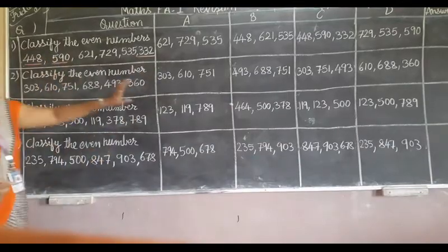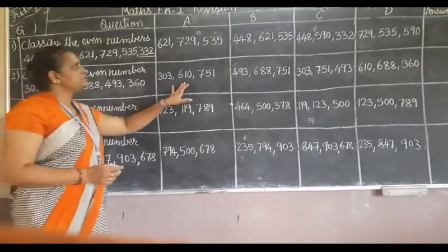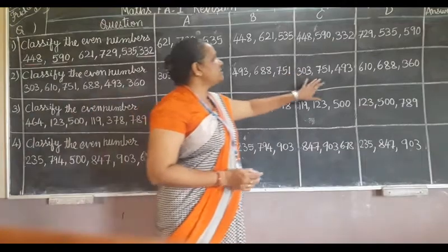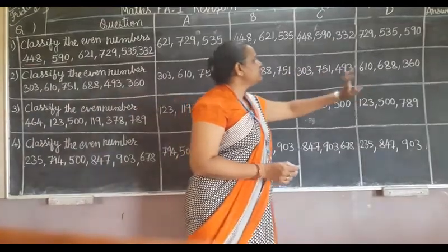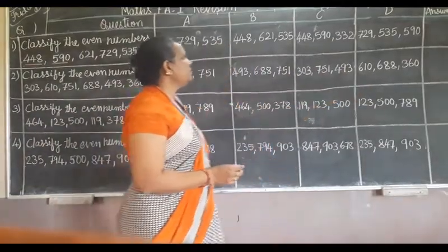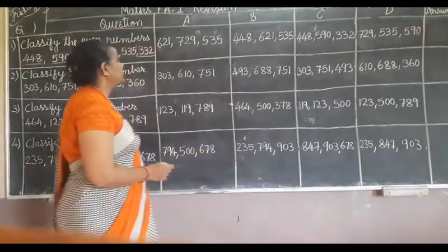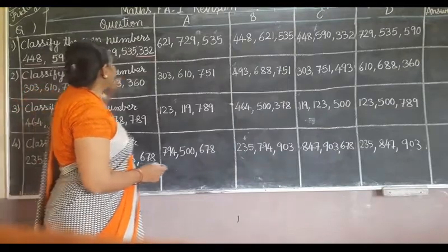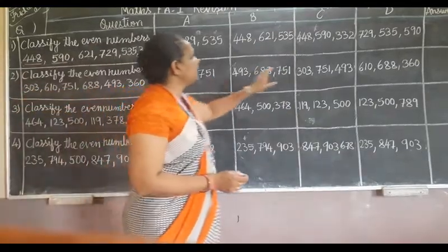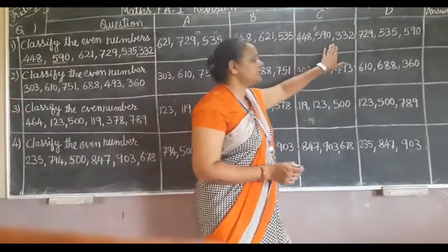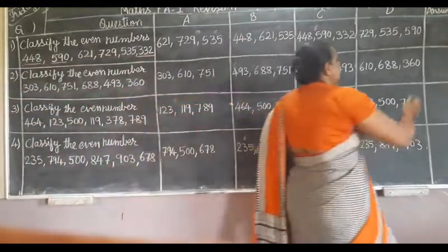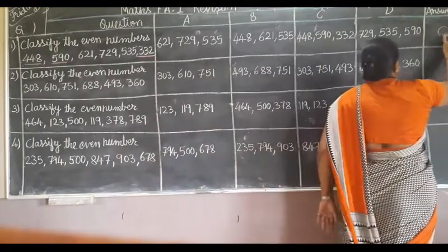Now in the options we have to see which are the even numbers. 448, 590 and 332. C option is the right one.